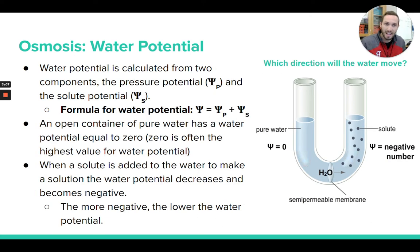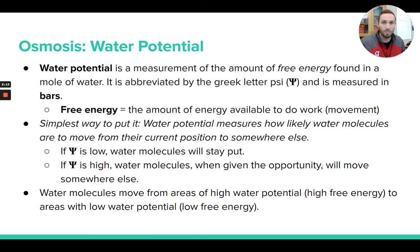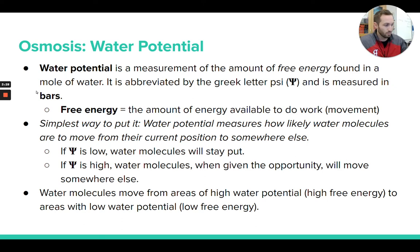Water potential is something we can calculate. We can actually measure and calculate a value for water potential. The symbol for water potential is the Greek letter psi — it looks like a little trident. It's measured in units called bars, so I could say that this water has a water potential of negative two and a half bars.